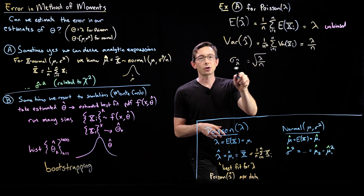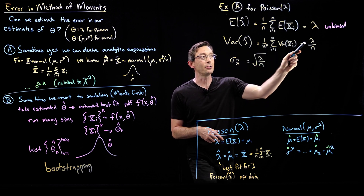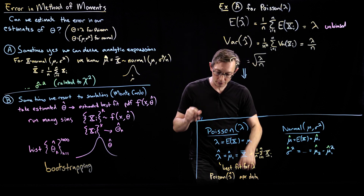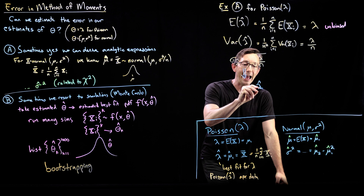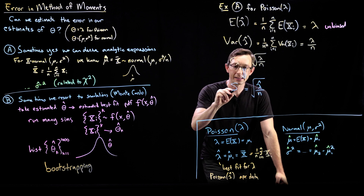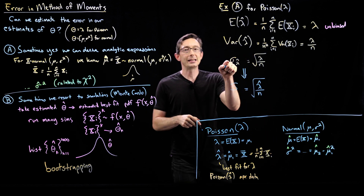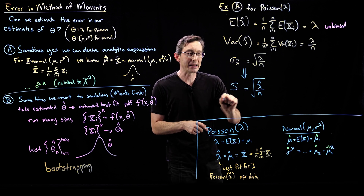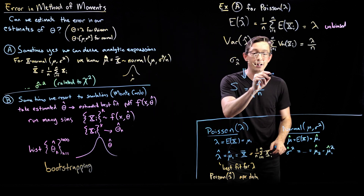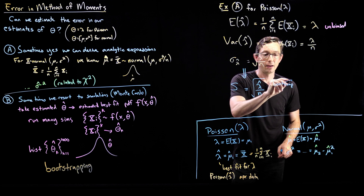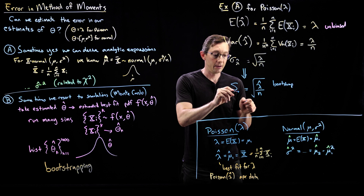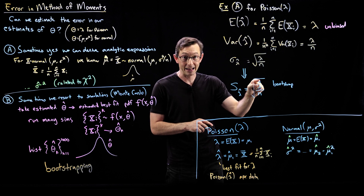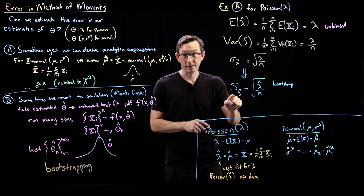A subtle point: we don't actually know the true lambda, just our estimate. So we can plug in lambda hat divided by n. Here sigma means the true variance of this thing, and s is our best estimate based on the data we have — a bootstrap estimate of the standard deviation of lambda hat, replacing the unknown true lambda with our best guess, lambda hat.